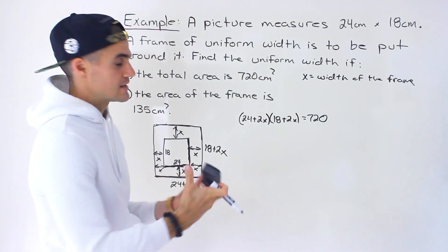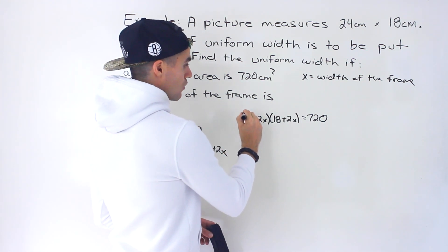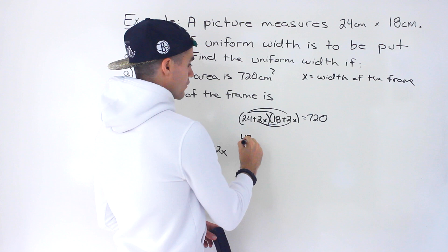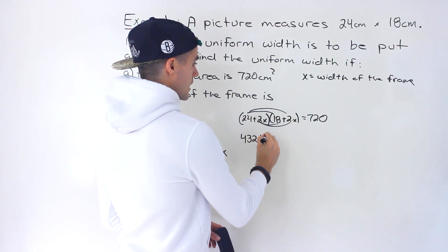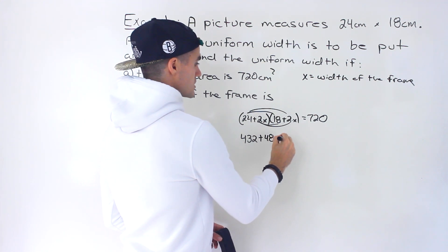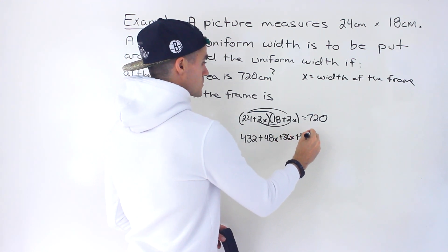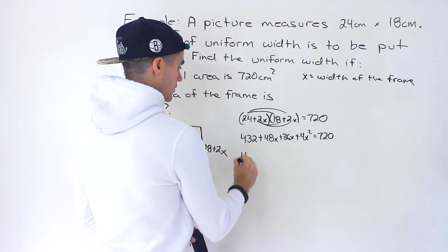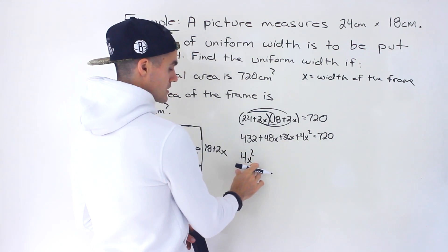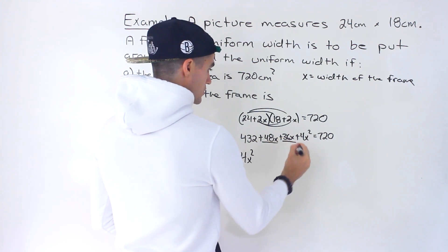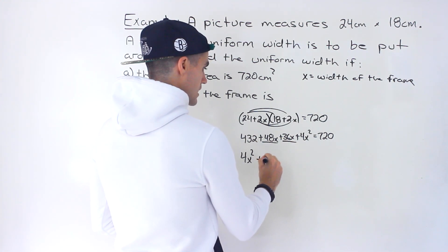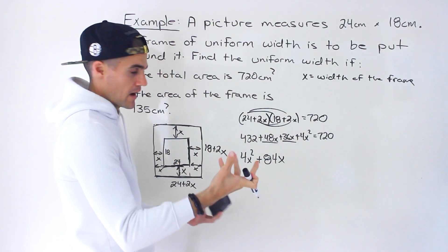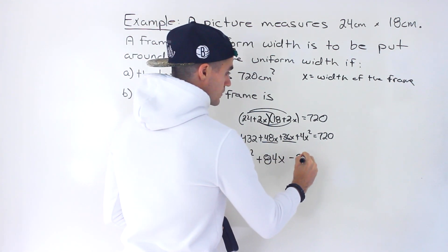We expand everything and bring it to one side to solve for x. 24 times 18 gives 432; 24 times 2x gives 48x; 18 times 2x gives 36x; and 2x times 2x gives 4x squared. That equals 720. Combining like terms and moving 720 over: 4x squared + 84x + (432 − 720) = 0, which gives 4x squared + 84x − 288 = 0.